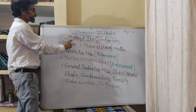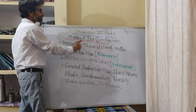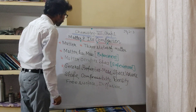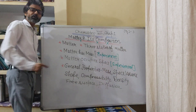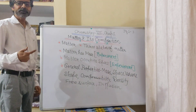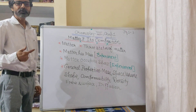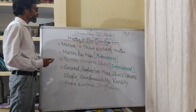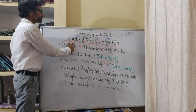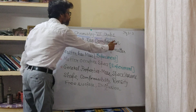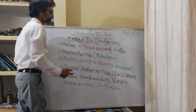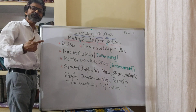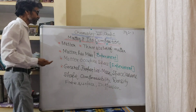This chapter has its name: matter and its composition. When we talk about matter and its composition, what is chemistry? Chemistry is the branch of science in which we study about the matter, its composition, its properties and its interaction with other substances.